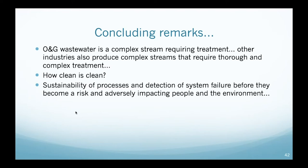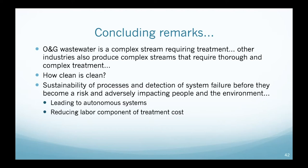Early detection of failure brings two benefits: machine learning to make autonomous systems — very applicable for remote operation in the oil and gas and mining industries — and reducing labor, which leads to reduced treatment cost. For small systems, labor is a big component of water treatment cost: if you pay one operator to treat a small amount of water, the labor load on the cost of water is significant. If we can teach systems to correct themselves with low maintenance, that can reduce the cost of water.